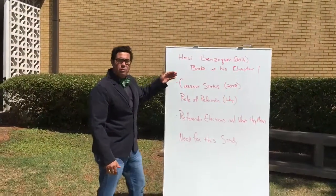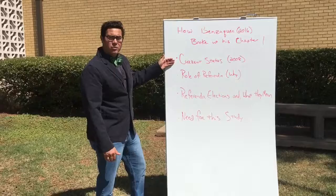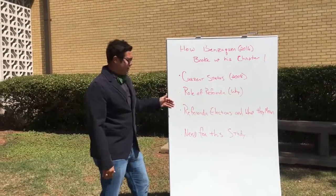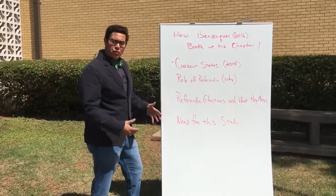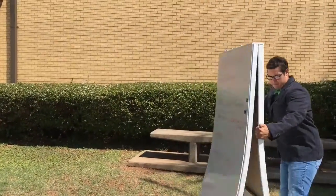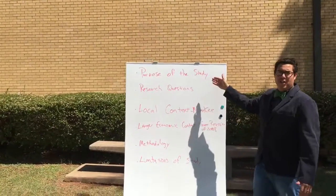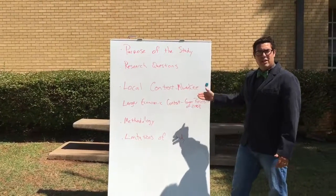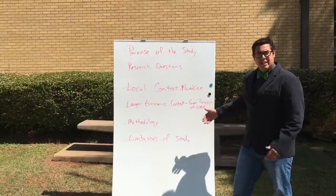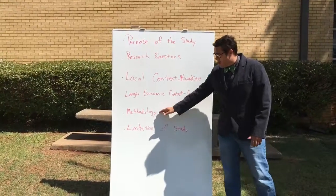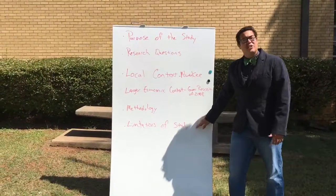Welcome to Ryder High School — it was built in 1961. This is how he broke up chapter one: current status, which was back in 2008 when he started the dissertation; the role of the referendum and why he was looking at this; then referendum elections and what they're used for; the need for this study in particular; the purpose of the study; research questions; the local context — located in Milwaukee; the larger economic context; a discussion of 2008 and the Great Recession; the methodology of how he conducted this study; and the limitations of the study.